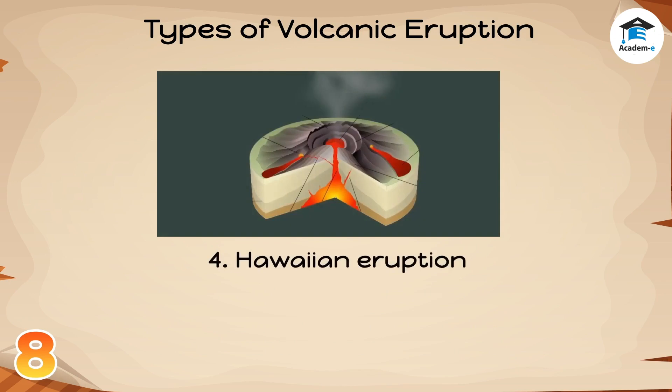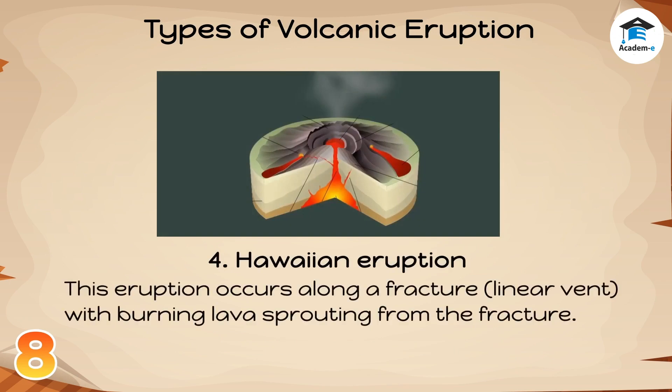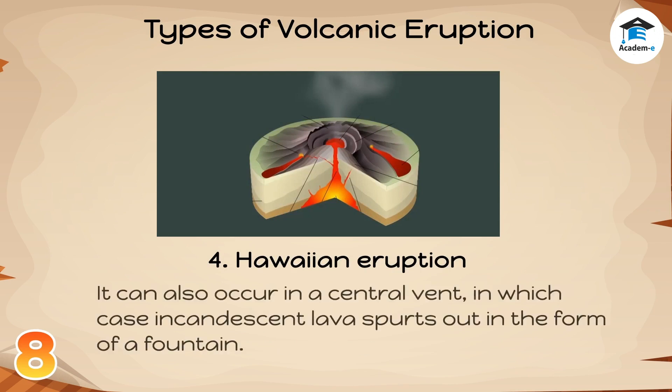4. Hawaiian Eruption: This eruption occurs along a fracture or linear vent, with burning lava sprouting from the fracture. It can also occur in a central vent, in which case incandescent lava spurts out in the form of a fountain.